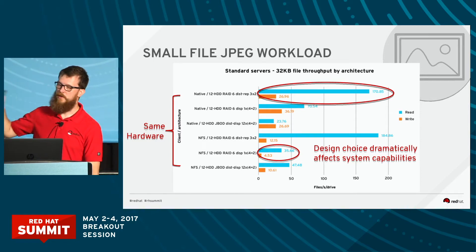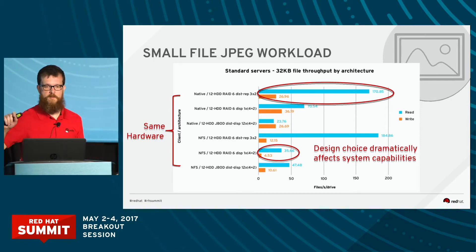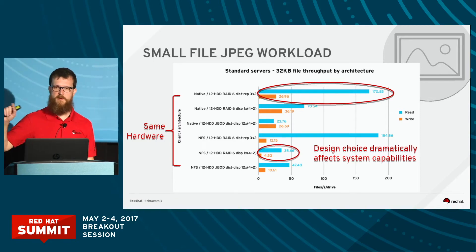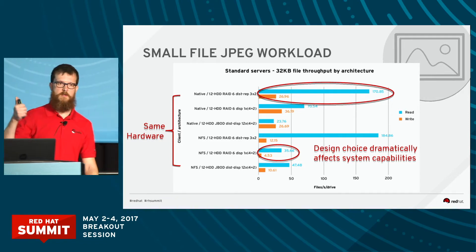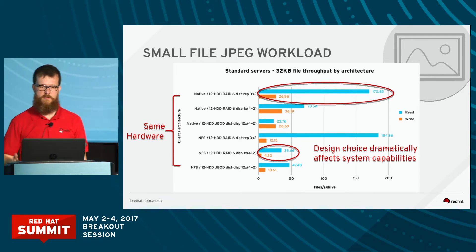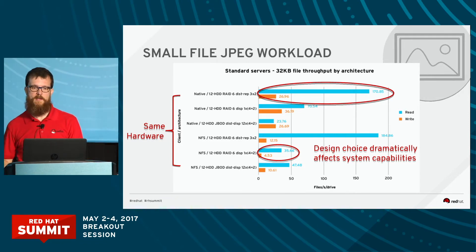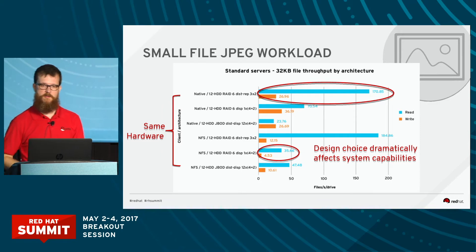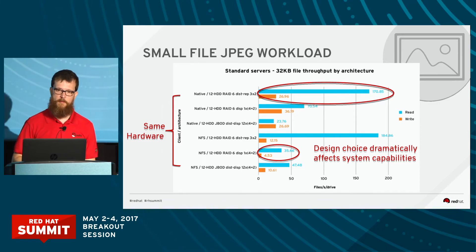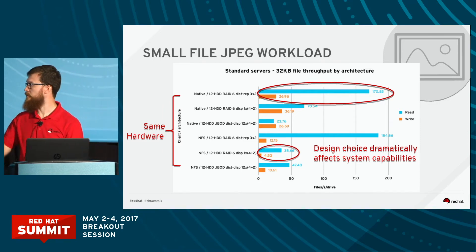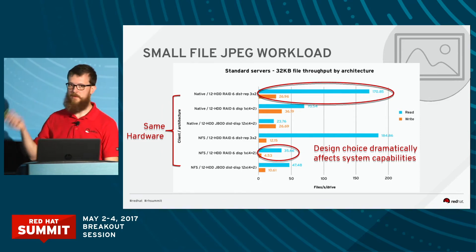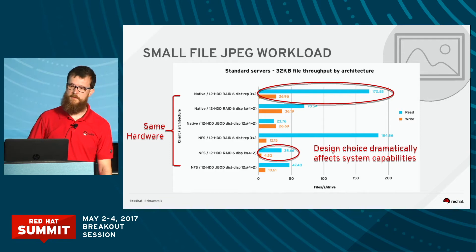If you take a look at the small file workload, all of these configurations you see down that Y axis are all the same hardware, just configured in different ways — we haven't changed anything about that hardware. Among those configurations, the best performing option at the top uses the Gluster native client — 12 disks in a RAID 6 configuration using a distributed replicated volume, 3 by 2 distributed replicated across those RAID 6 volumes.